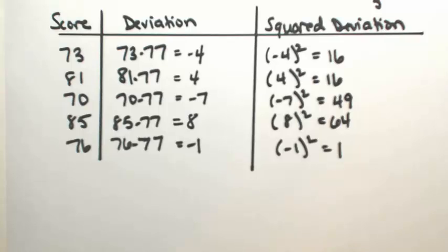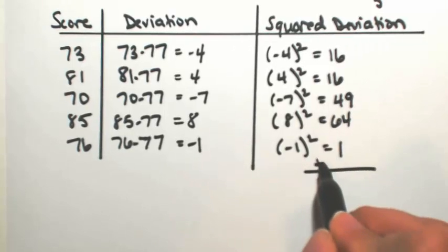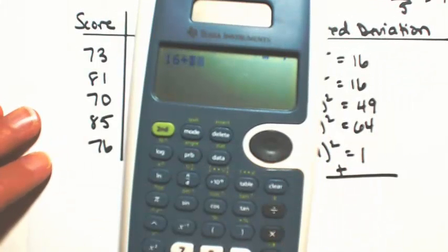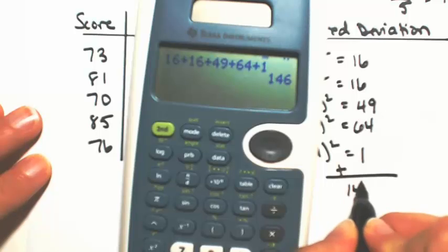So essentially what we're going to do now is take the average of all of these squared deviations. So we're going to add all of these up. So 16 plus 16 plus 49 plus 64 plus 1. So 146.